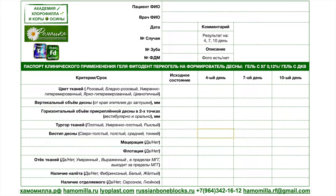В нескольких точках оцениваем состояние: биотип десны — каков он анатомически. Наличие мацерации и флотации десны в этой зоне, отёка с различной степенью проявления. Наличие налёта в этой зоне — особенно на ранних сроках он будет. И наличие отделяемого: да или нет, и какого вида — серозный или гнойный.